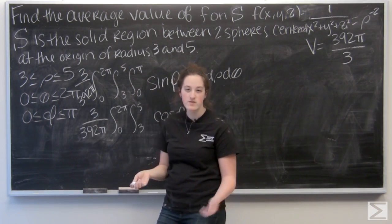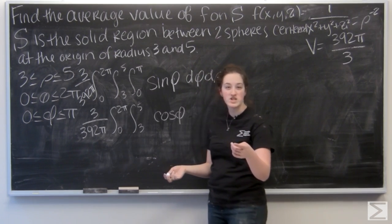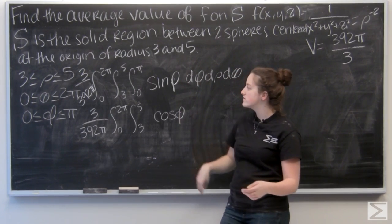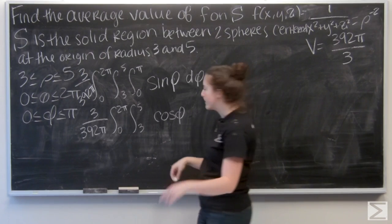Well, I don't really want to deal with that negative sign. So I'm going to go ahead and switch the bounds of integration for phi. So now it's from pi to zero. That just takes care of my negative.